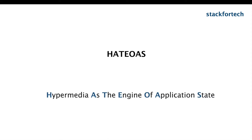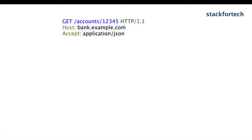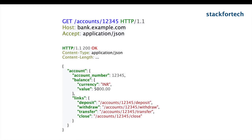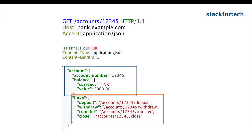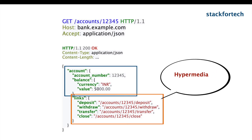HATEOAS is an acronym for Hypermedia as the Engine of Application State. Consider an example where a GET request is invoked to query the account balance. The REST API response ideally consists of just the requested information, but along with the account balance it also includes some REST endpoint links. This is what is known as hypermedia — these hypermedia links are responsible for driving the application state.